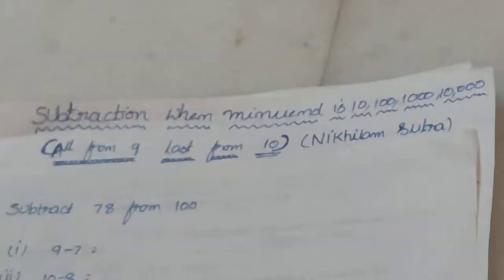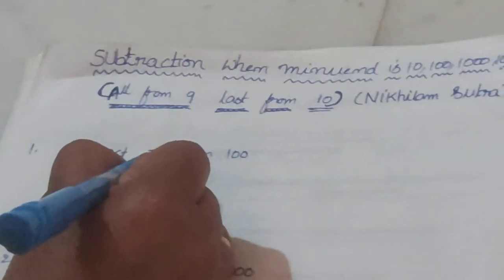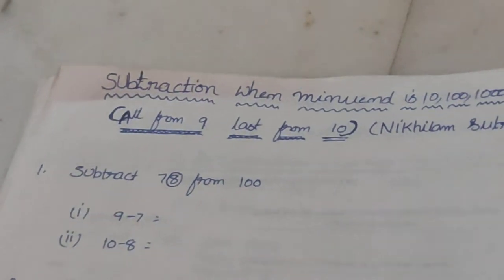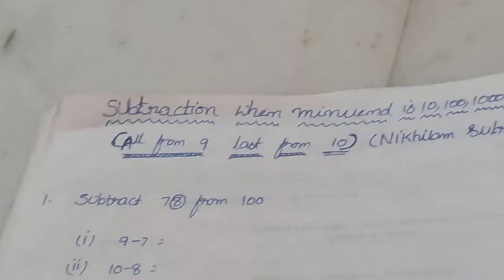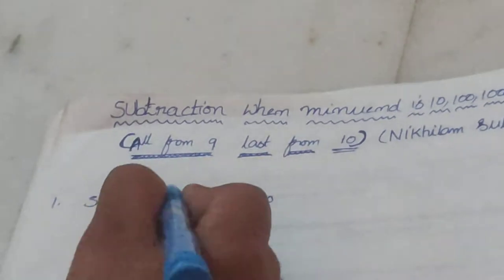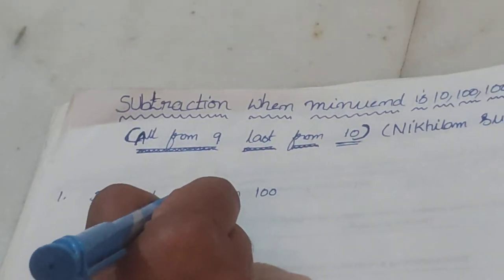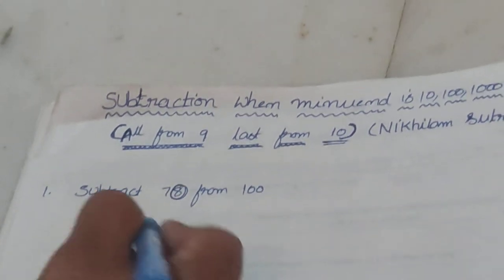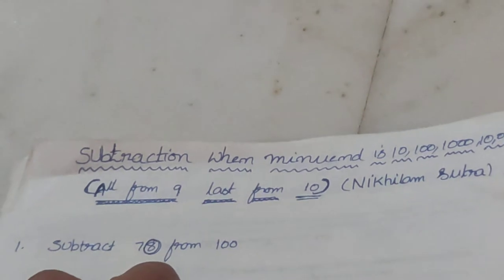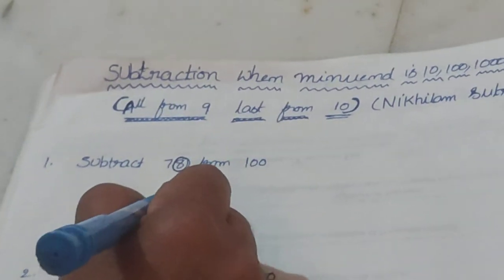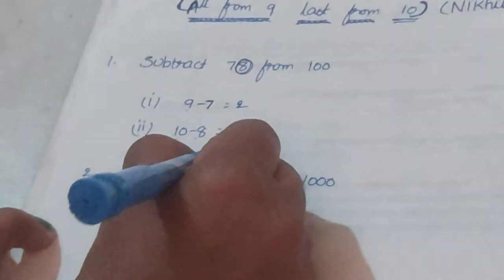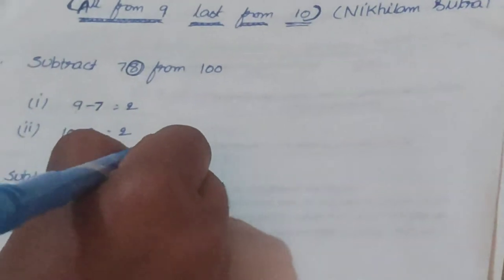The Nikhilam Sutra says: all from 9, last from 10. That means you subtract the last digit from 10 and the remaining digits from 9. Now we are subtracting 78 from 100. Here, 8 is the last digit, so we subtract 8 from 10, and 7 from 9. 9 minus 7 is 2, and 10 minus 8 is 2. So 100 minus 78 equals 22.